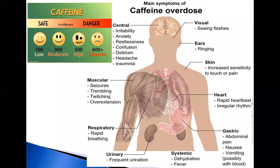Caffeine overdose can result in a state of central nervous system over-stimulation known as caffeine intoxication, a clinically significant temporary condition that develops during or shortly after the consumption of caffeine. According to the international classification of diseases, cases of very high caffeine intake — more than 5 grams — may result in caffeine intoxication with symptoms including mania, depression, disorientation, disinhibition, delusions, hallucinosis, or psychosis. Death from caffeine ingestion appears to be rare and is most commonly caused by an intentional overdose of medication.